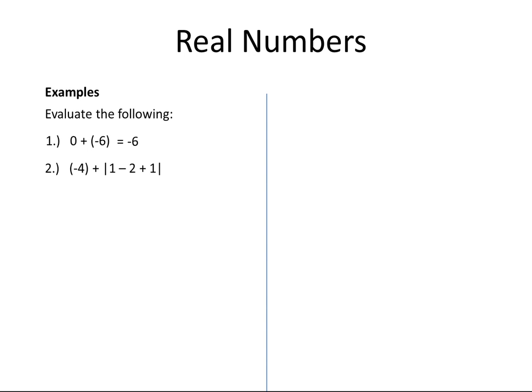Minus 4 plus the absolute value of 1 minus 2 plus 1. This is equal to minus 4 plus the absolute value of minus 1 plus 1, because 1 minus 2 is minus 1. And minus 1 plus 1 is 0. The absolute value of 0 is 0. The final answer is minus 4.